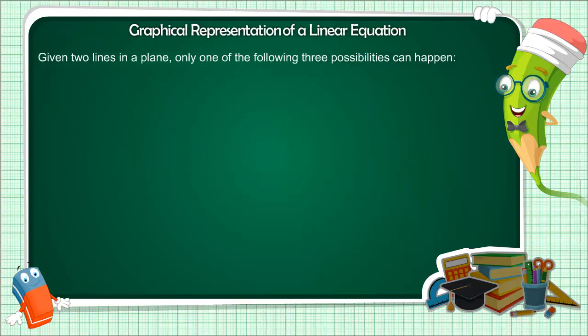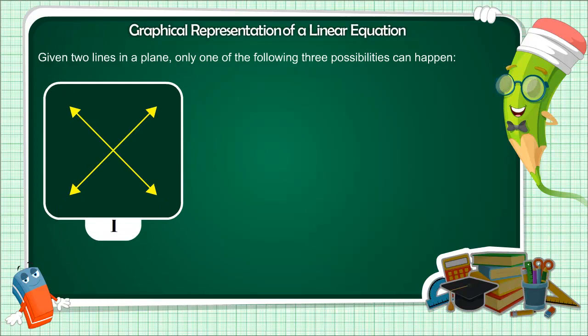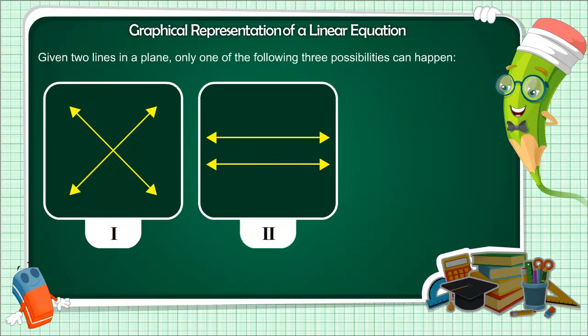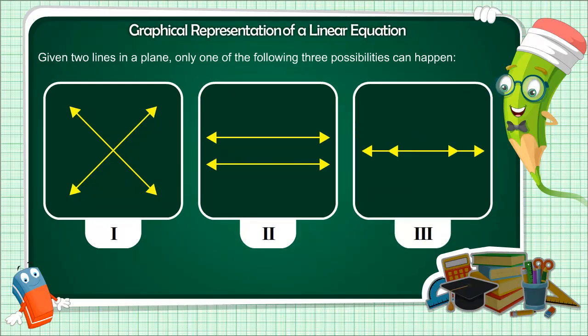Suppose we are given two lines on the graph. Only one of the possibilities given below will appear there. Either those two lines will intersect each other at some point, or will those two lines be parallel to each other? Another possibility can be made that both the lines will be coincident.